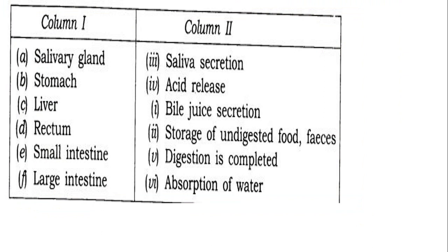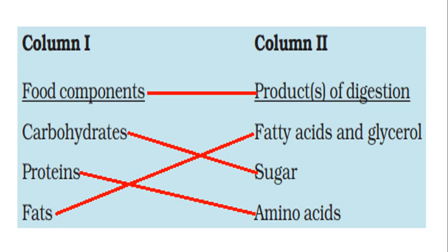Summary: the salivary gland produces saliva. The stomach produces hydrochloric acid (HCl). The liver produces bile juice, which is stored in the gallbladder. The rectum is the storage of undigested food or feces. The small intestine is where digestion is completed and absorption takes place. The large intestine is where reabsorption of water, sugar, and salts occurs. Food components and products of digestion: carbohydrates are converted into glucose, proteins into amino acids, and fats into fatty acids and glycerol.